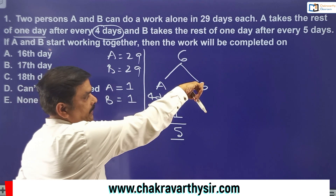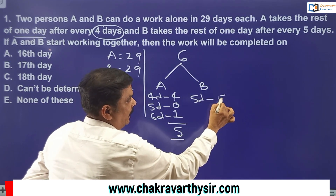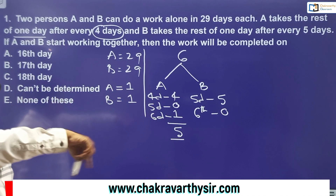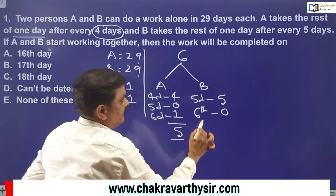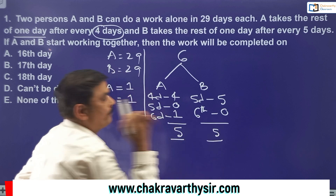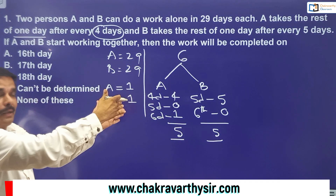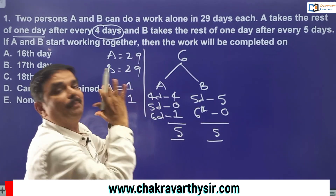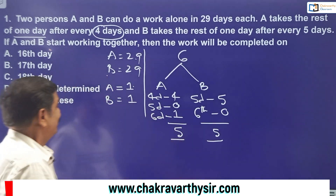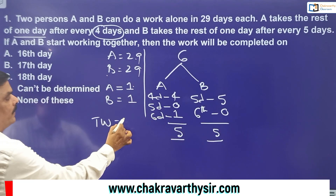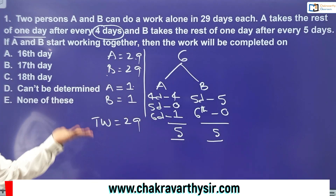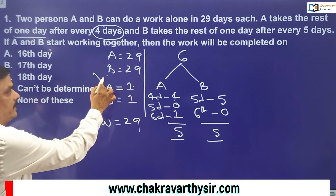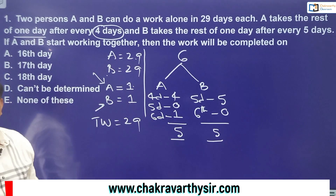The total amount of work is 29 units. Taking 29 as the total work, A's efficiency is one unit per day and B's is one unit per day. So in six days — one set — A and B together can do 5 plus 5, which is 10 units of work. In the first six days, 10 units of work is completed. Now, to complete 29 units, how many days will that take? Taking three sets gives us 18 days. In 18 days, 10 into 3 equals 30 units of work — which is very close to 29.